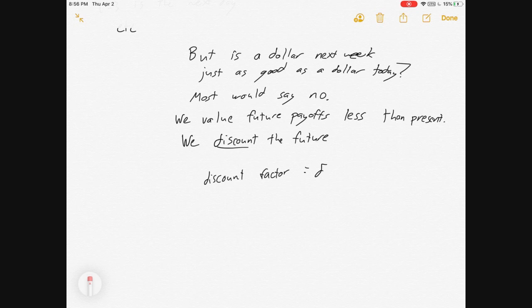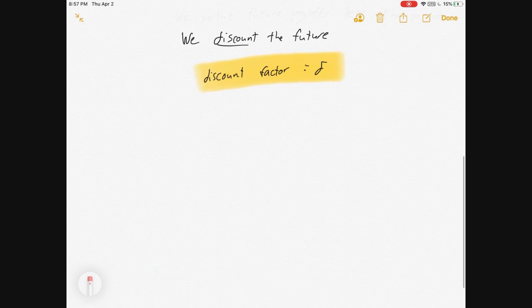We tend to discount the future, and so we're going to have a discount factor that we will just call δ. This discount suggests that we value future dollars less than present dollars.